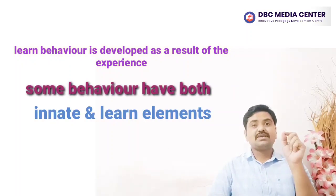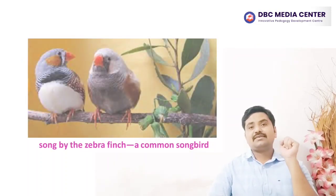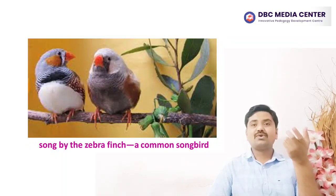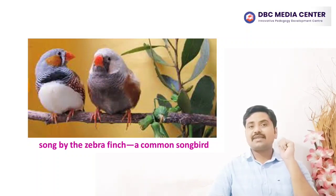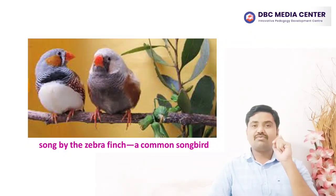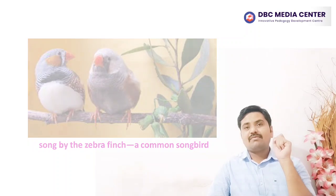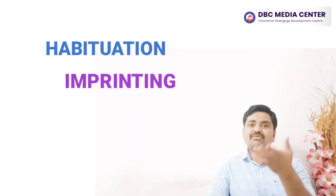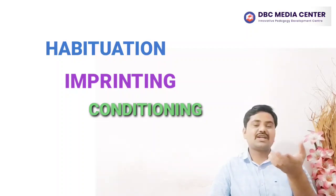Of course, some behaviors have both learned and innate elements. Zebra finches, as we saw in a previous example, are genetically programmed to learn a song, but the song they sing depends on what they hear from their father. In this video lecture, we will look at examples of learned behavior, starting with simple ones like habituation and imprinting, and then working up to more complex cases like operant conditioning and cognitive learning.